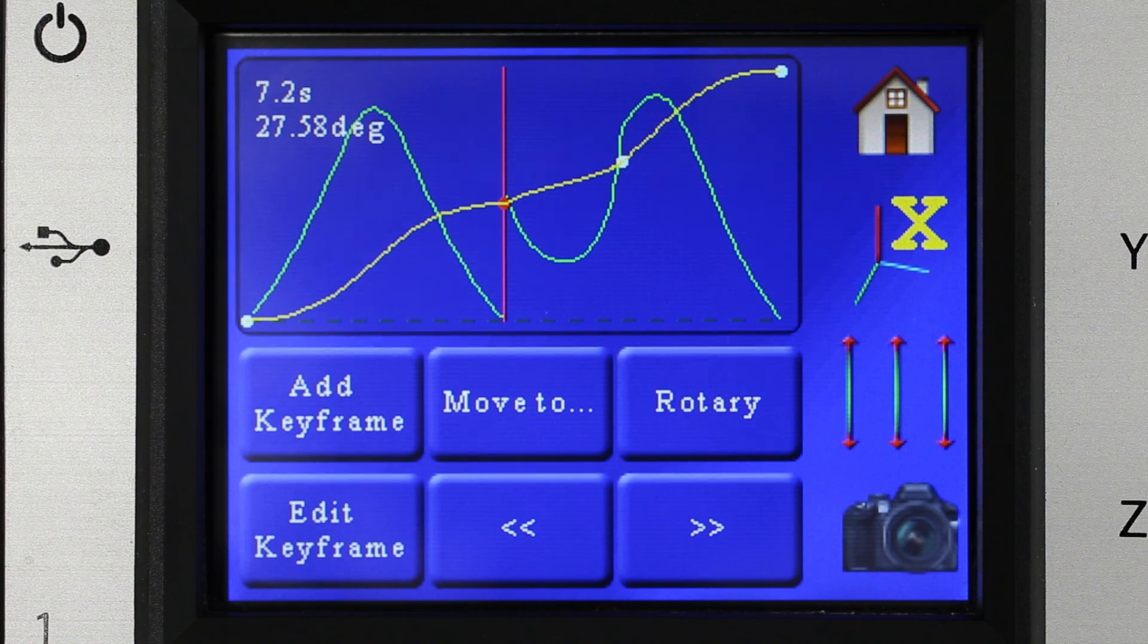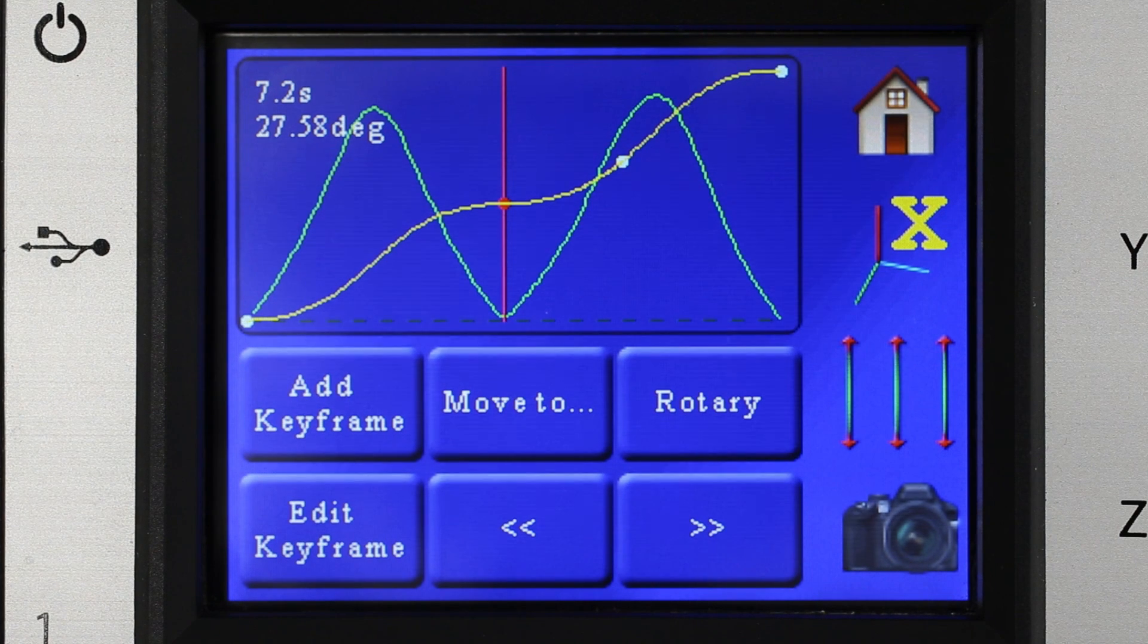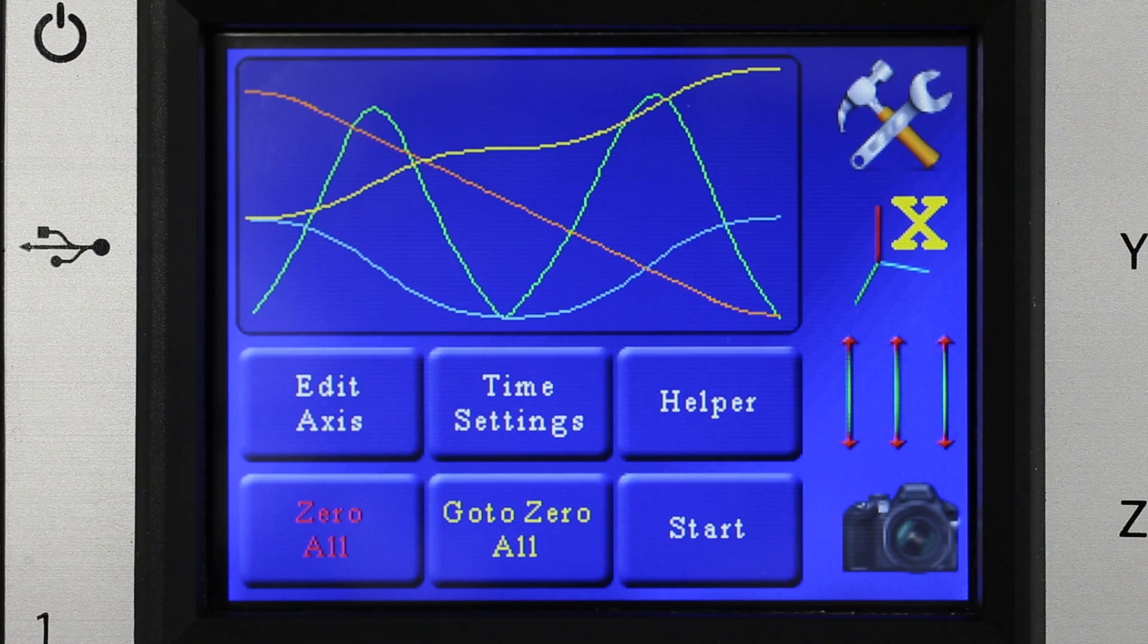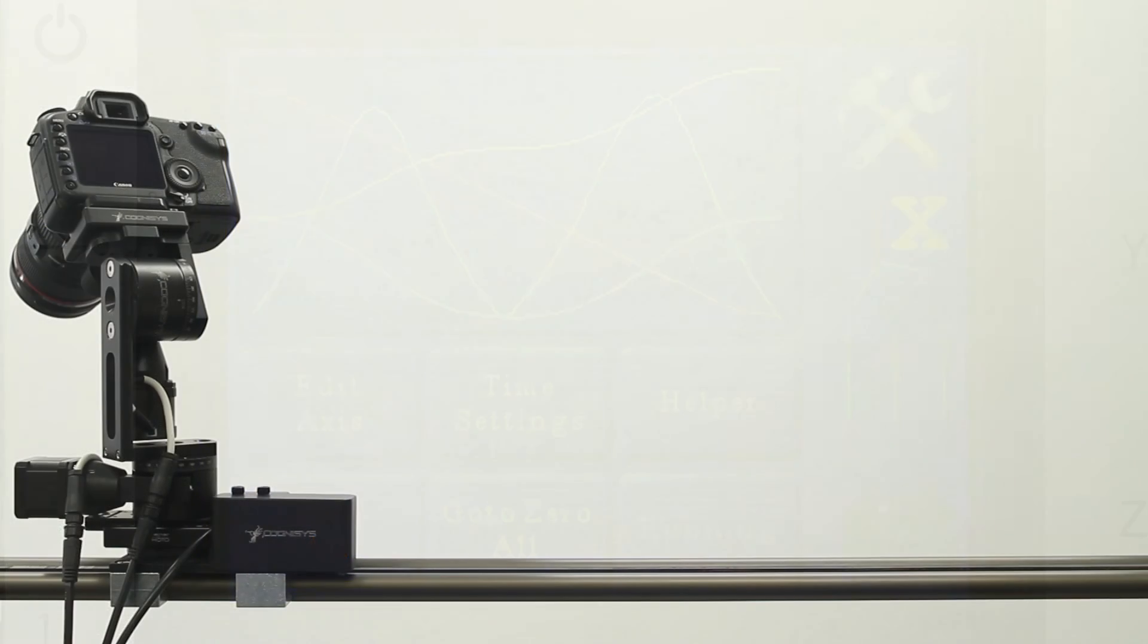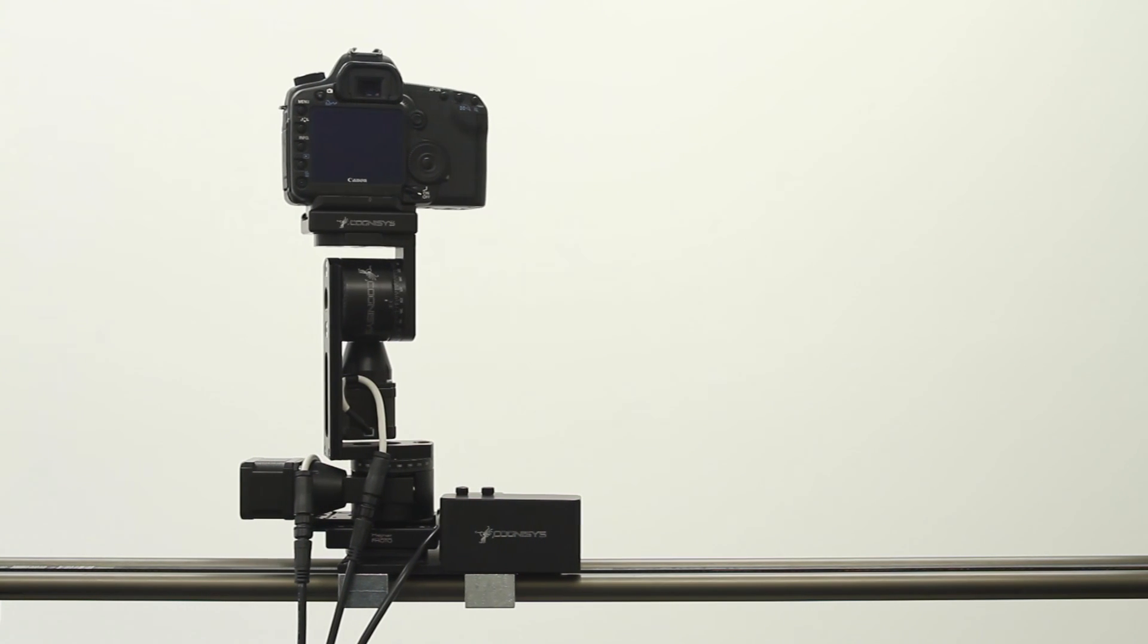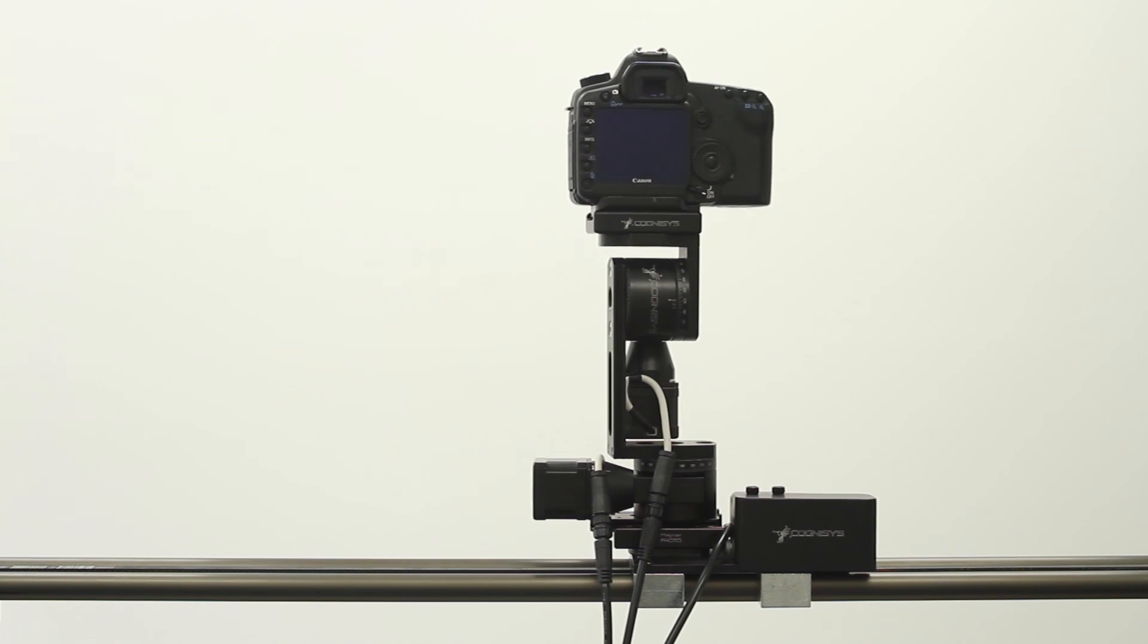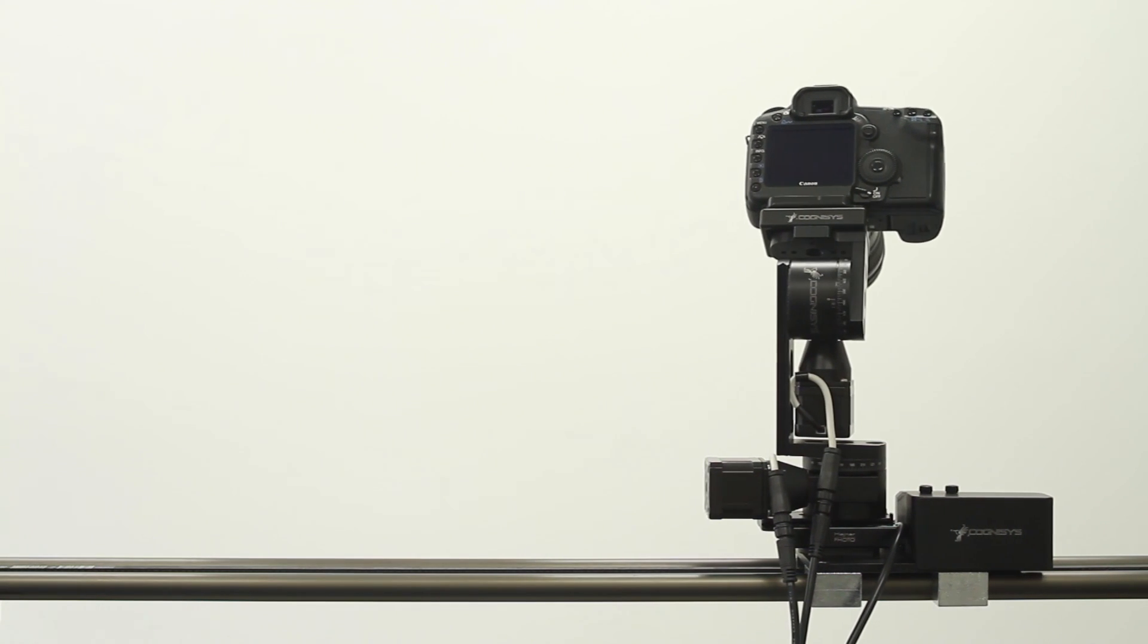So what we want to do is also ease out that keyframe. That looks pretty good. The velocity goes to zero in this condition which is perfect. Now if we play this we'll get a full stop at that 7.2 seconds. Perfect.